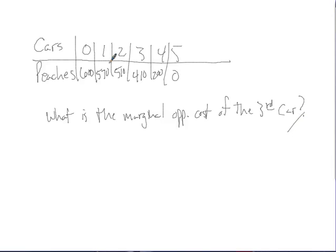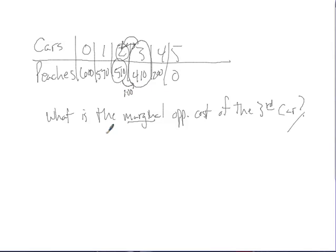If we're looking at the third car, we know that producing three cars allows 410 peaches. Since marginal means incremental — going from 2 to 3 — we look at the step before: when producing 2 cars we had 510 peaches. Going from 2 to 3 cars, we dropped from 510 to 410 peaches. So we had to give up 100 peaches to get the third car. The marginal opportunity cost of the third car is 100 peaches.